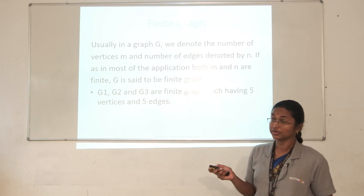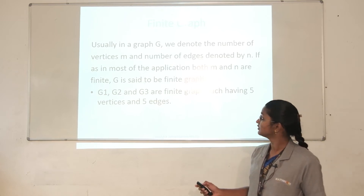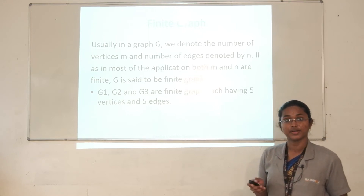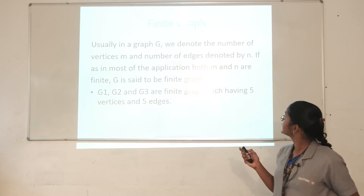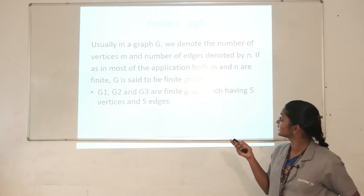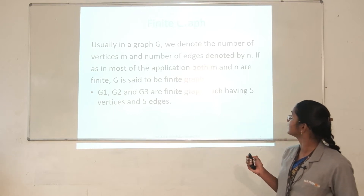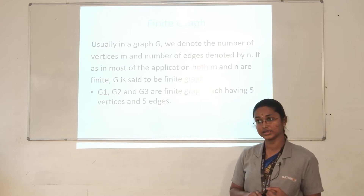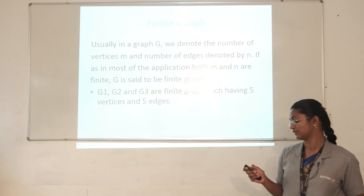A finite graph is one in which the number of vertices and the number of edges is finite — that is, the vertex set is finite and the edge set is finite. The number of vertices in a graph is denoted by M and the number of edges is denoted by small n. If both sets are finite, the graph is said to be a finite graph.